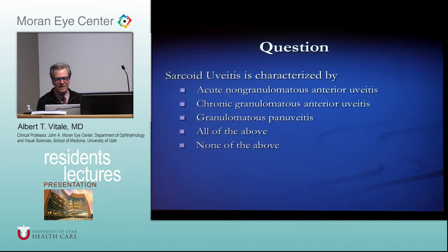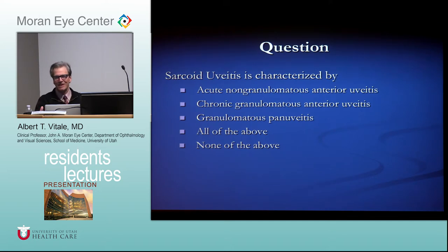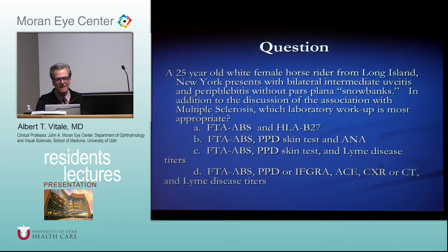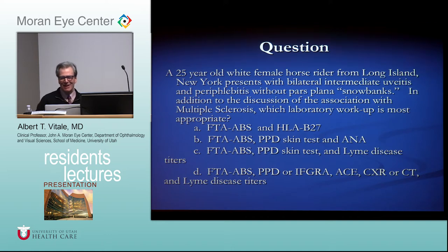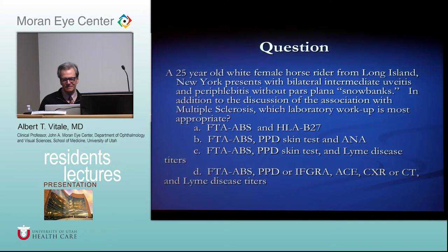Sarcoid uveitis is characterized by all types of uveitis presentations — syphilis and sarcoid both cause protean manifestations. A 25-year-old white female horse rider from Long Island with bilateral intermediate uveitis, periphlebitis, and snow banks — in addition to discussing MS risk, you should order Lyme serology given her intermediate uveitis and risk factors for Lyme disease.